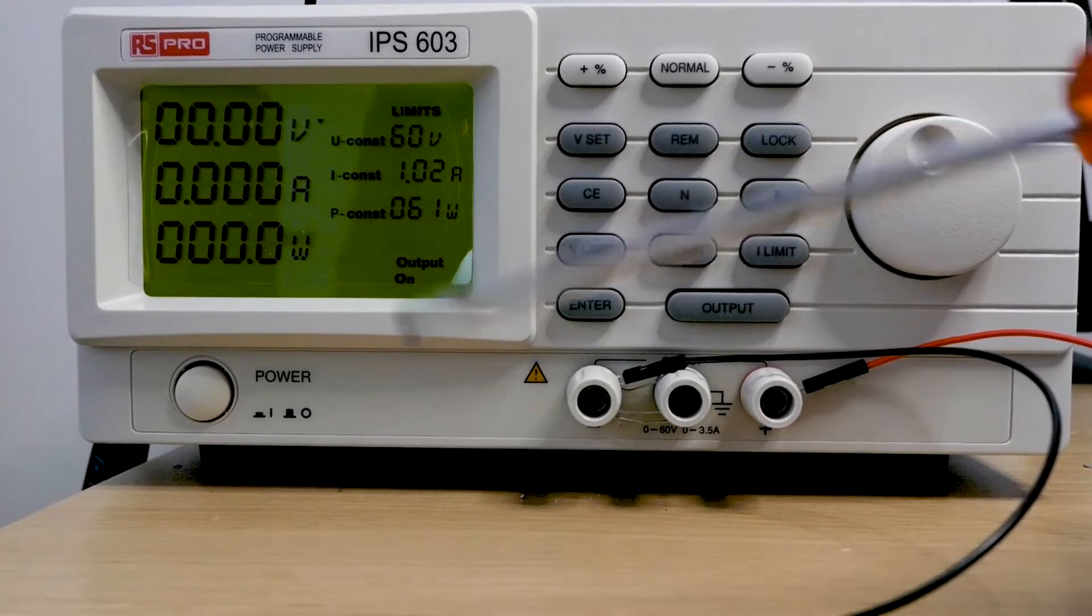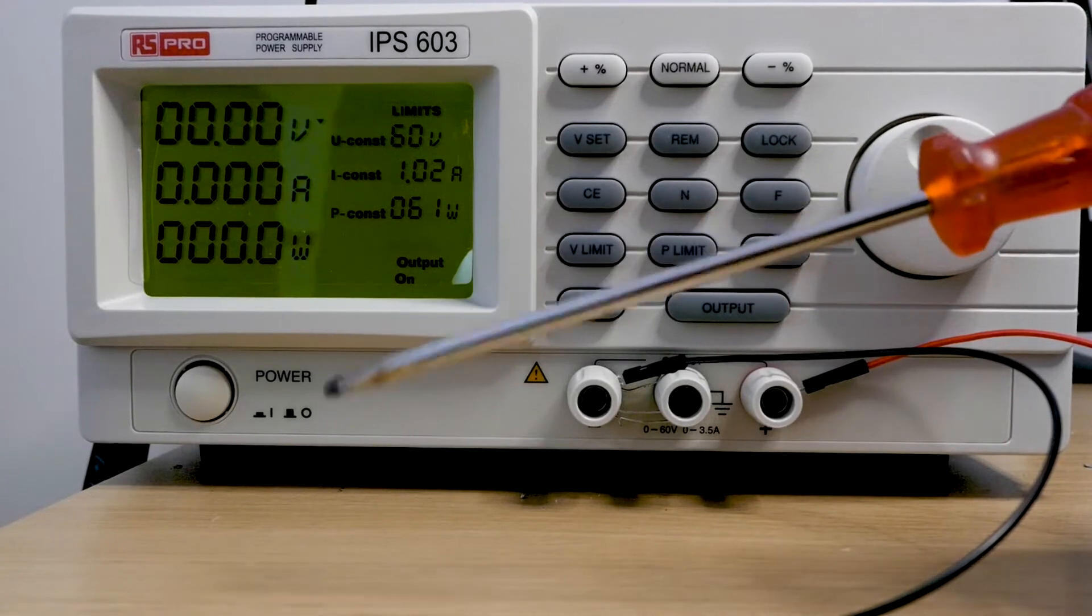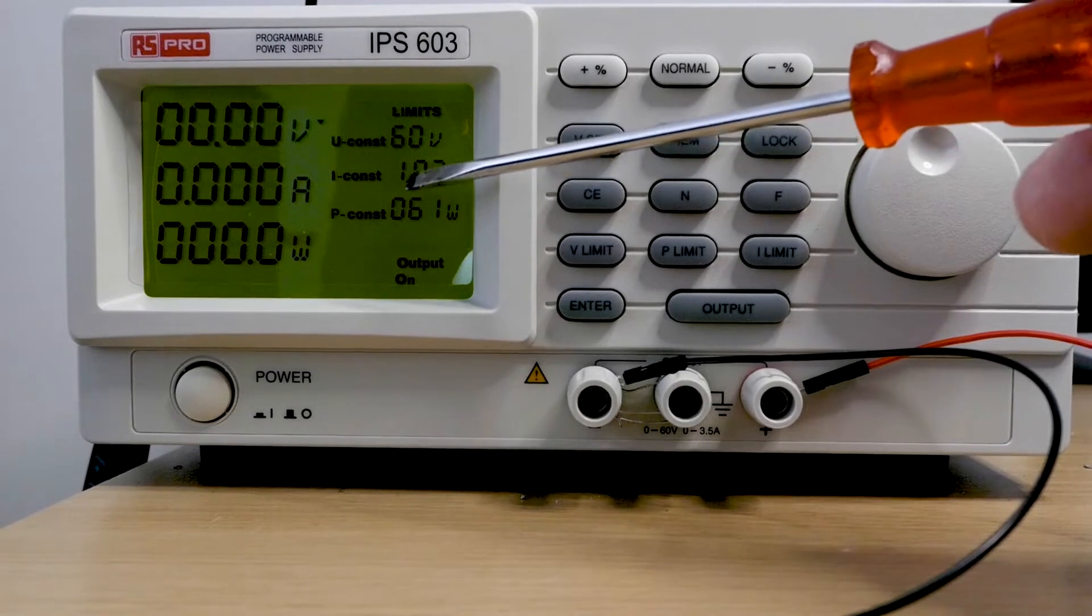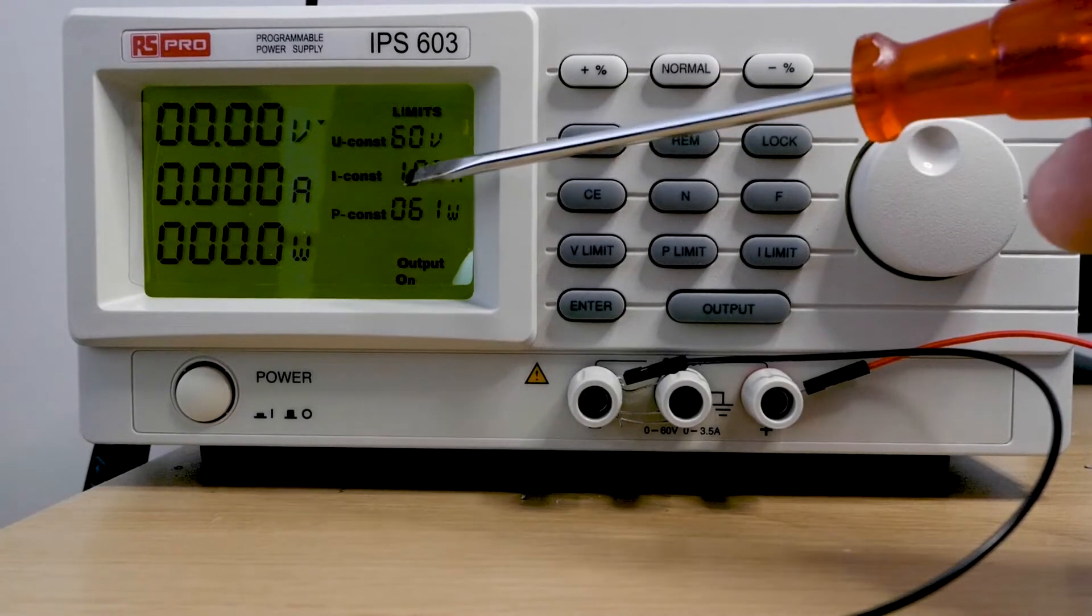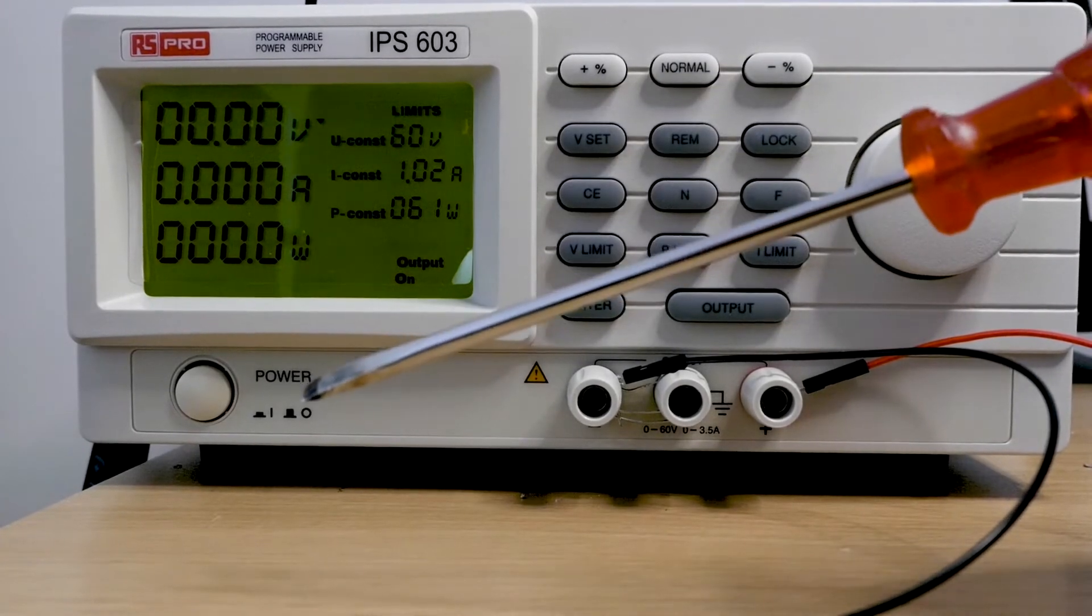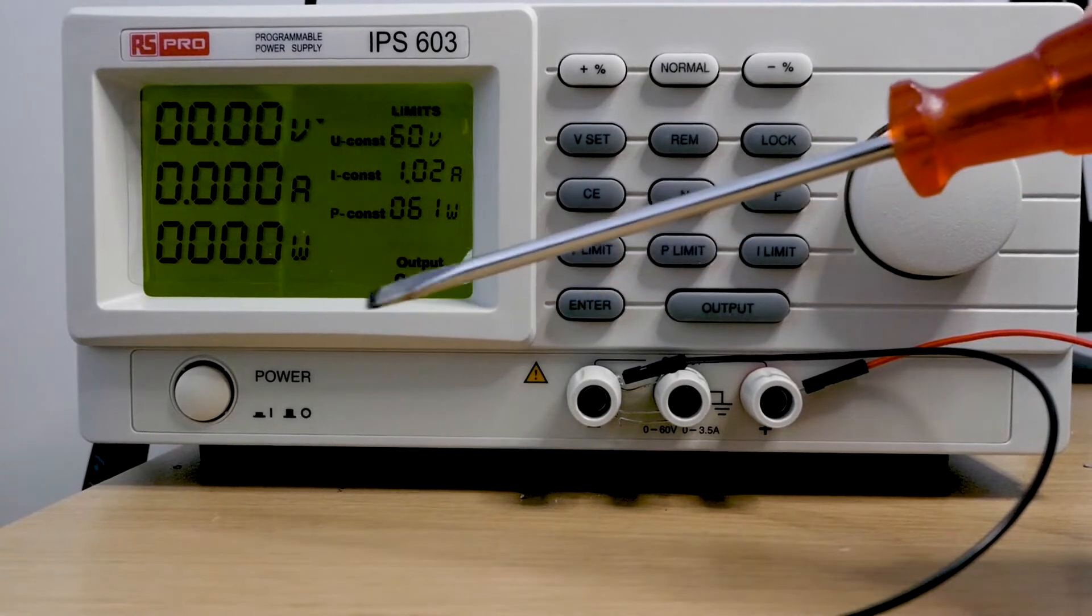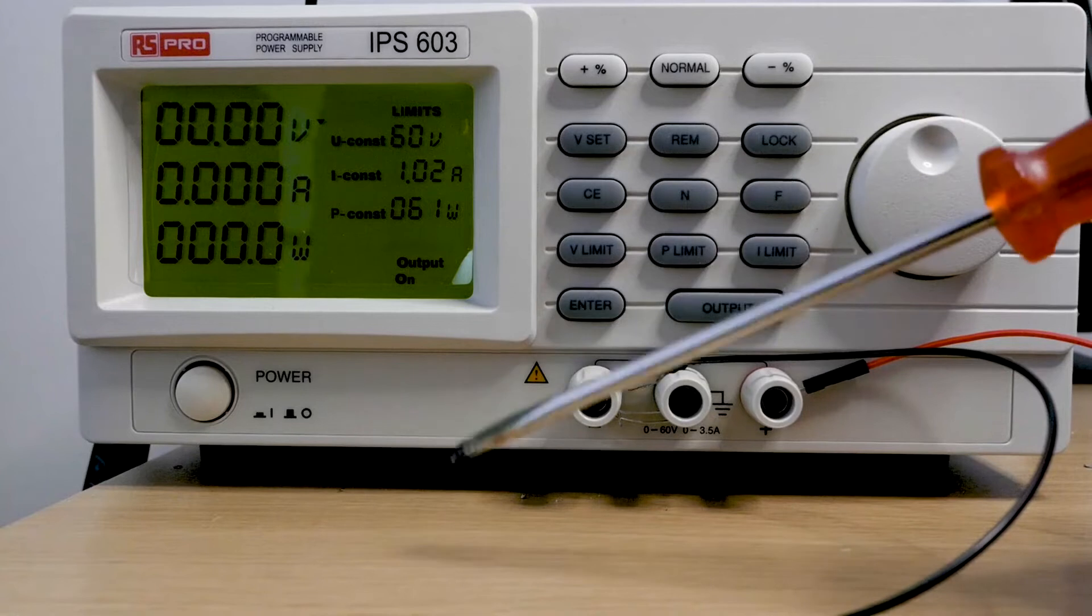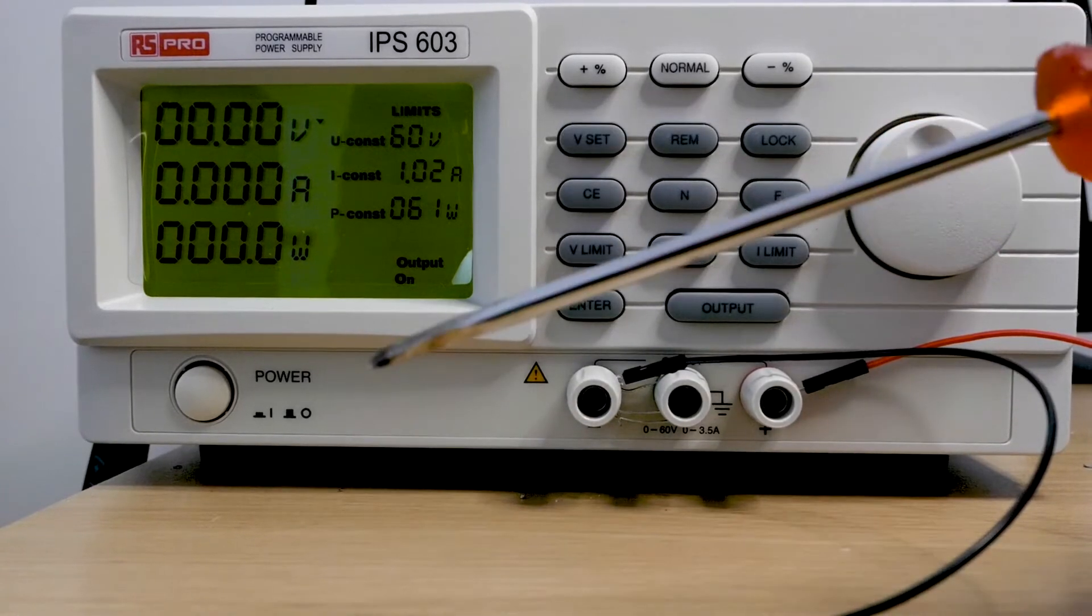However, if we replace that 60 ohm resistor for a 30 ohm resistor, our voltage is 60 divided by 30, which would mean our current is 2 amps. That's above our limit and what this power supply will do is it will reduce the output voltage automatically between these two terminals down to 30 volts to match that current limit.